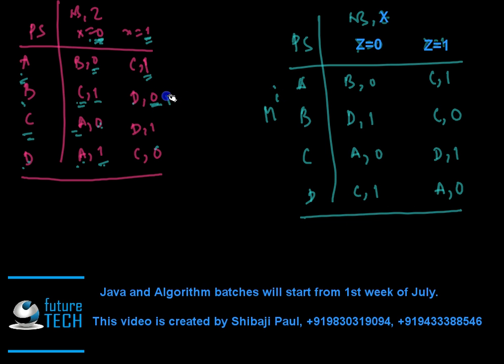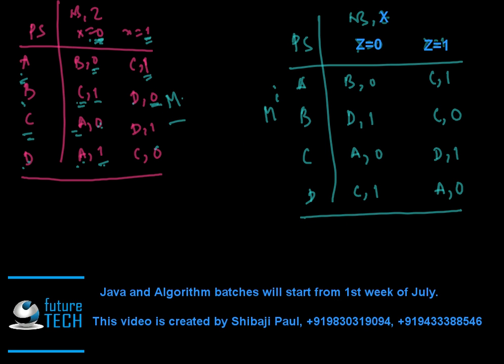So this is the inverse machine mi of the given machine m. In this way we can find out the inverse machine of a given machine. Thank you very much.